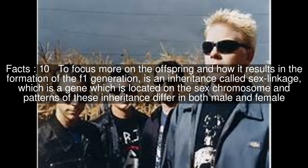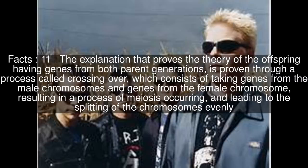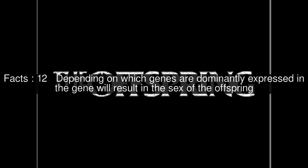To focus more on the offspring and how it results in the formation of the F1 generation: there is an inheritance called sex linkage, which is a gene located on the sex chromosome, and patterns of this inheritance differ in both male and female. The theory of the offspring having genes from both parent generations is proven through a process called crossing over, which consists of taking genes from the male chromosomes and genes from the female chromosome, resulting in a process of meiosis occurring and leading to the splitting of the chromosomes evenly. Depending on which genes are dominantly expressed, this will result in the sex of the offspring.